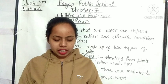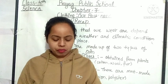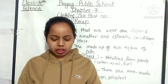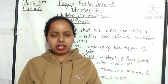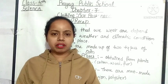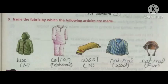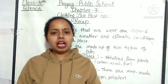Our last exercise is: name the fabric by which the following articles are made. Wool — natural fiber; cotton — natural fiber; wool — natural fiber; wool — natural fiber; fur — natural fiber.